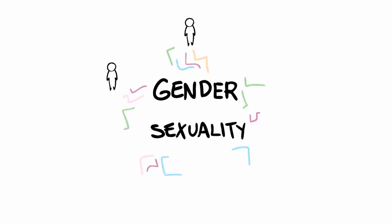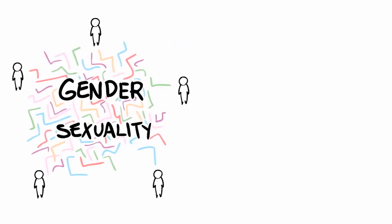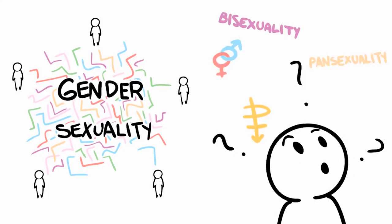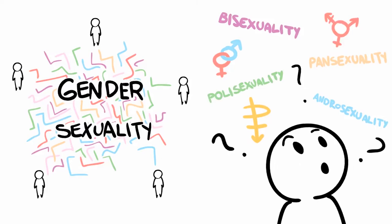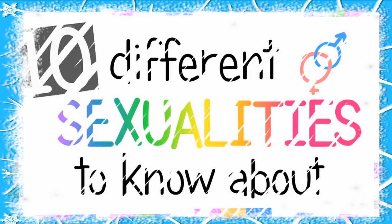Gender and sexuality are two concepts that are incredibly individualized, and so it shouldn't be surprising that they are so complex. It can be hard to navigate the world of sexuality due to the different terms and labels. This video aims to help you navigate this world by arming you with some definitions and examples of 10 different sexualities, some of which you might not even know about.